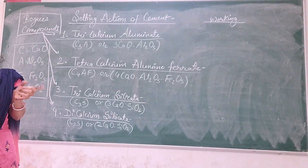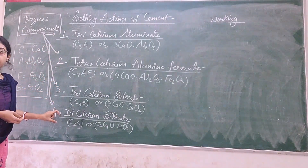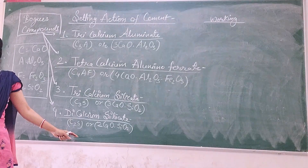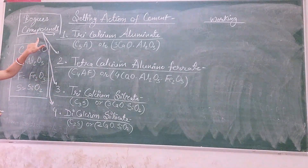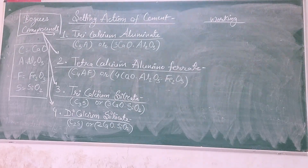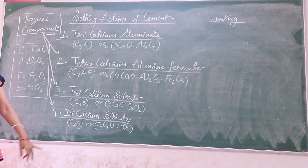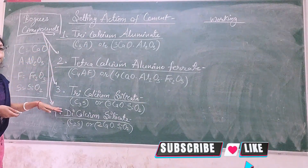By adding water to cement, certain chemical reactions are involved. These chemical reactions produce four compounds. These four compounds are also known as Bogue compounds. Whenever in an exam the question asks about Bogue compounds or setting action of cement, both questions are the same — you need to write these four things. For these four things you will get eight marks, meaning two points per compound.